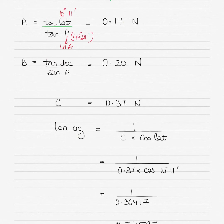So you find tan lat divided by tan LHA and you will get 0.17. Ignore any negative sign if you get any, and I have stuck to two decimal places.